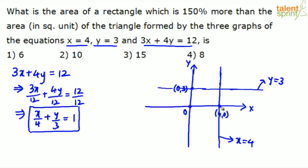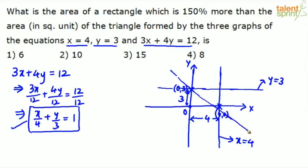x-intercept is 4 means the distance of the point from the origin is 4. y-intercept is 3 means the distance of the point from the origin is 3. So this third line passes through these two points — (4, 0) and (0, 3) — and this is the third line.